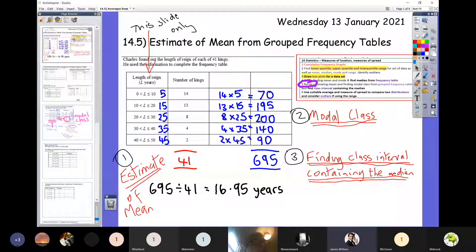That was like the number of goals being scored yesterday. The difference here is with this question, Charles found out the length of the reign of each of 41 kings. He used this information to complete the frequency table. So what do we know about that first line?